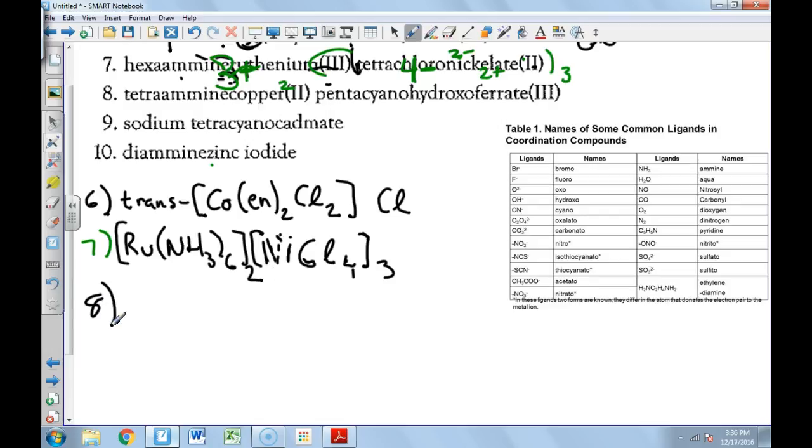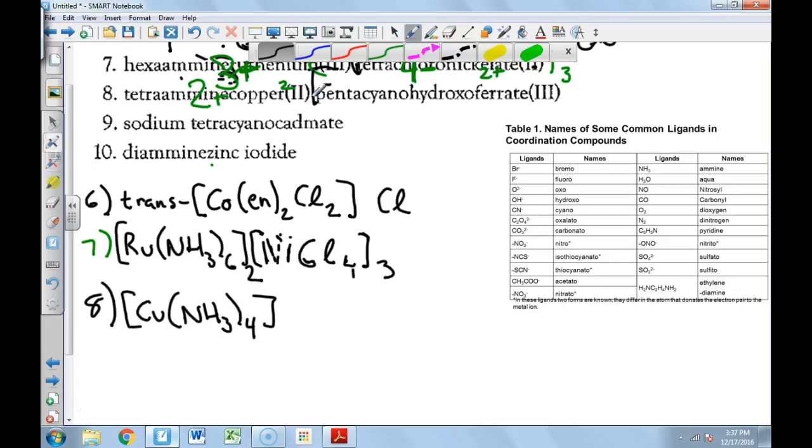Number eight. I'm going to start with the positive ion, read it backwards, and write it forward. So copper-2, Cu, see you later copper, that's how I always remember that. Then tetraamine, so that's NH3-4. What's the charge on this side? The charge on this side is two plus. Copper is two plus, amine doesn't have a charge.